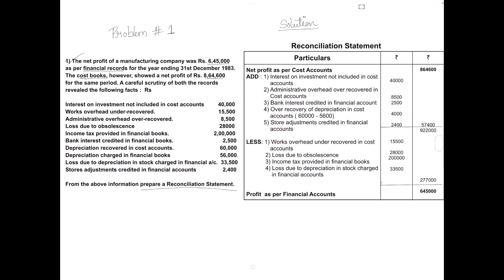First, write the heading 'Reconciliation Statement' and draw the columns: Particulars, Rupees, Rupees. In this problem both profits are given, but we have to take any one profit — either profit as per financial records or profit as per cost records. I have taken net profit as per cost accounts.